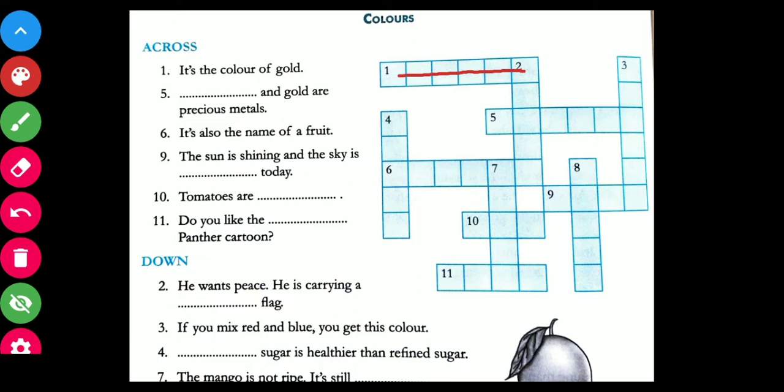Next, it's also the name of a fruit. The color and the name of the fruit, so sixth is orange. Next, number 9: the sun is shining and the sky is dash today. So 9 is blue. Number 10: tomatoes are red.